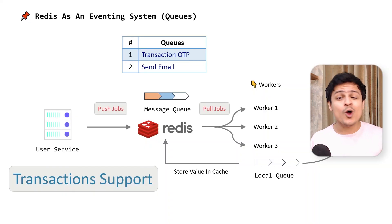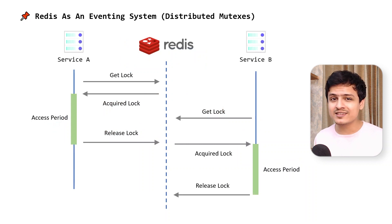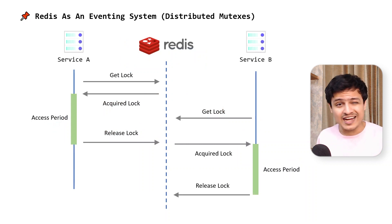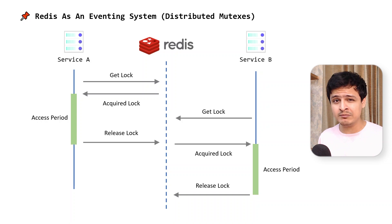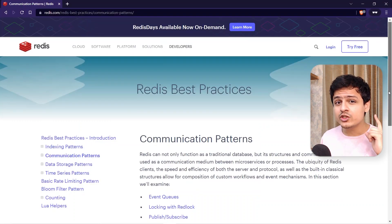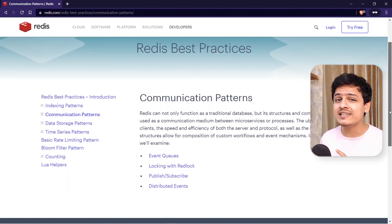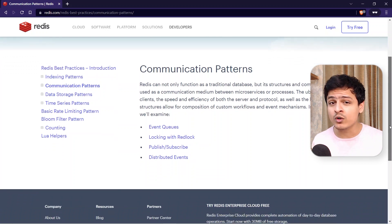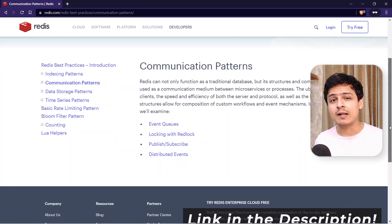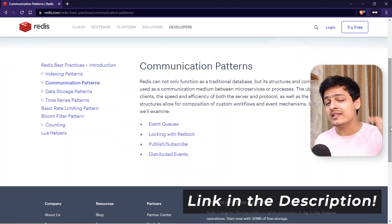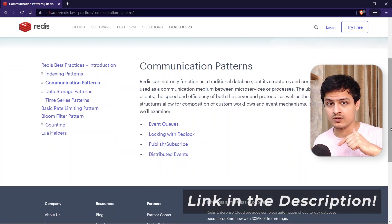Lastly, you can also implement distributed mutexes and semaphores in Redis. I hate using these, but sometimes you just can't avoid them. I strongly suggest you go through this guide to understand these patterns in more detail. I'll put a link to it in the description below.